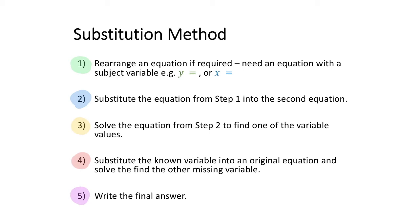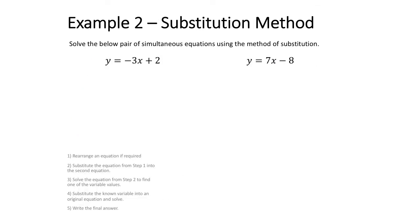So let's have a look at how we apply these steps in an example. We have a set of simultaneous equations: y equals negative three x plus two, and y equals seven x minus eight. We want to solve those to find their point of intersection. Starting off by checking whether we need to rearrange any equations — we can see that both equations already have a variable as a subject, so we can proceed.